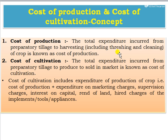Next, we look at the cost of production and cost of cultivation. The cost of production means the total expenditure incurred from primary tillage or preparatory tillage to harvesting, including threshing and cleaning of the crop. The cost of cultivation is the total expenditure incurred from preparatory tillage to produce sold in the market.